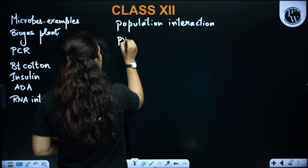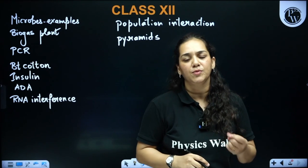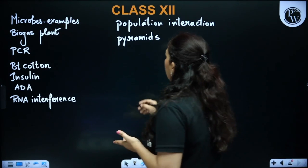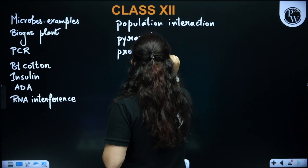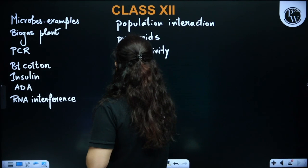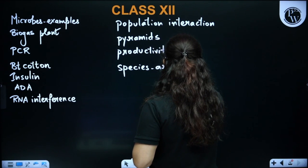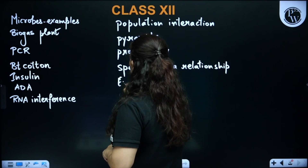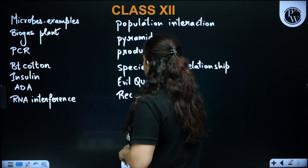In Ecosystem, pyramids become very important — pyramids of biomass, number, and energy are repeatedly asked, usually as easy questions. Productivity is also an important topic in ecosystem. In Biodiversity and Conservation, species-area relationship is repeatedly asked, as are the 'evil quartet,' alien species examples, and recent extinctions.